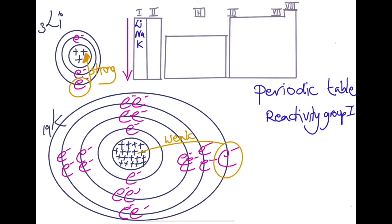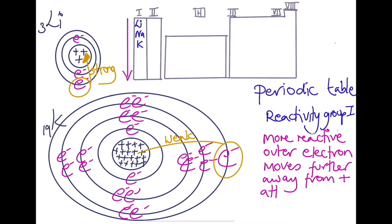Ok, so that's the reason why as we go down our Group 1, Group 1 is getting more reactive. That outside electron is getting more and more difficult to stay attracted to the positive of the proton in the middle. So if another atom comes along with a stronger force of positivity, that electron will disappear off. And that is why Group 1 gets more reactive as we go down.